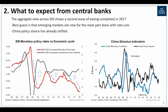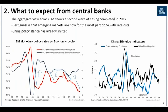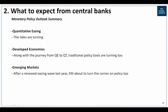Now that China's policy has actually turned and paused around neutral, it's certainly at least less of a tailwind. The key point of all of this is that monetary policy was a big tailwind for risk assets and for the global economy. Going forward, that's increasingly going to be less of the case. To summarise: quantitative easing tides have turned already. Developed economies are on the journey from quantitative easing to quantitative tightening, traditional policies are starting to turn too, and for emerging markets, after that renewed easing wave, they're about to turn the corner on policy as well.